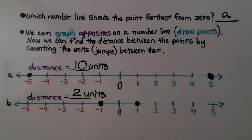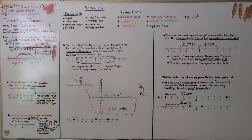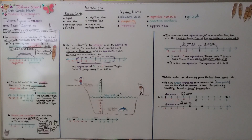Just remember: in order to be an opposite, the numbers are on different sides of zero with the same number of jumps. Zero is its own opposite — the opposite of zero is zero. Zero is not positive or negative, but it is a whole number and it is an integer. And there are no fractions or decimals for integers — they're just positive or negative whole numbers.